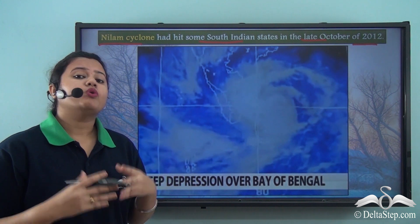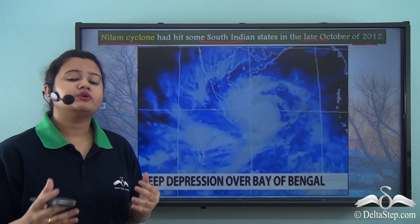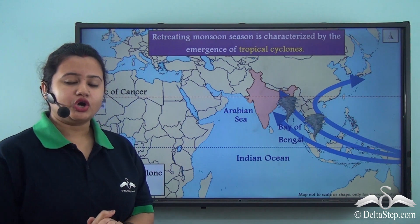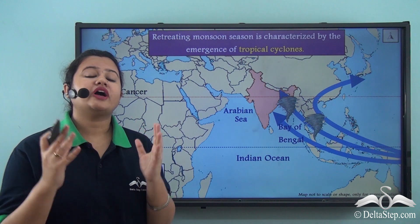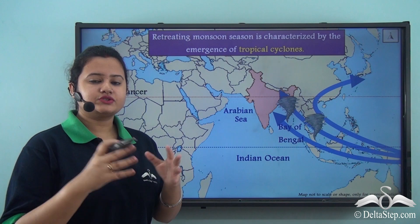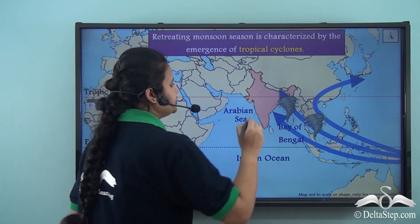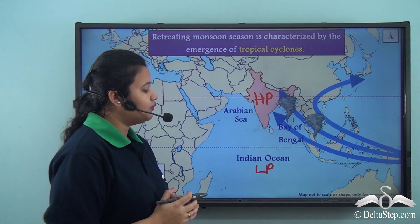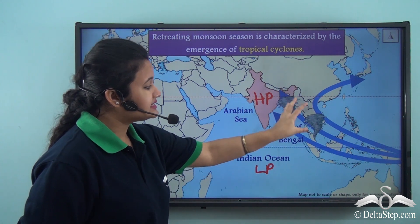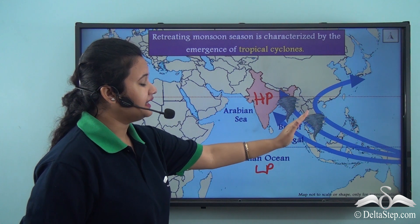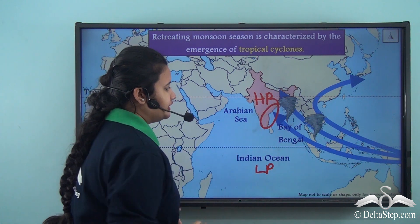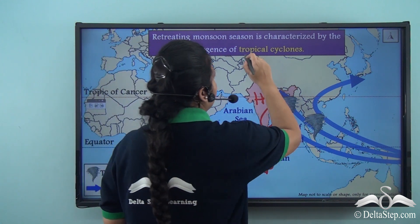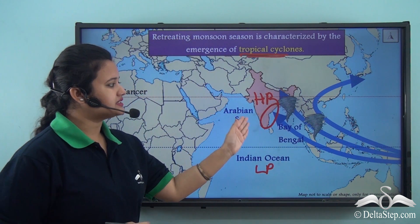What results in frequent cyclones in October and November on the southeastern coast of India? During retreating monsoon, high pressure exists over India and low pressure over the adjoining water bodies. Due to this low pressure over water bodies, many cyclones develop over the Bay of Bengal and gradually proceed towards the southeastern coast. So the season of retreating monsoon is characterized by the emergence of tropical cyclones, which mainly hit the southeastern coast of India.